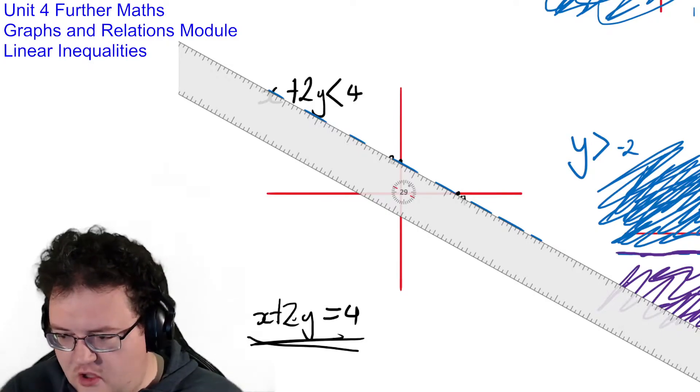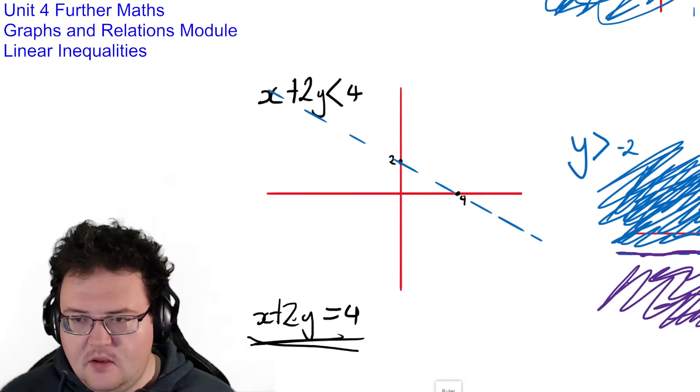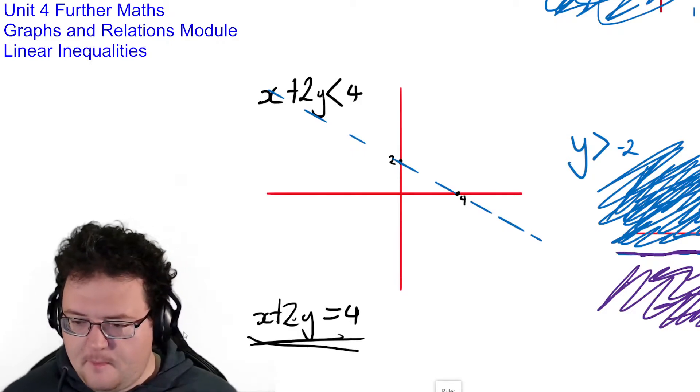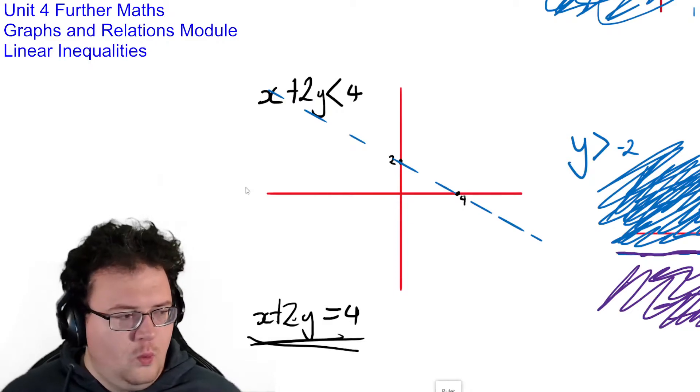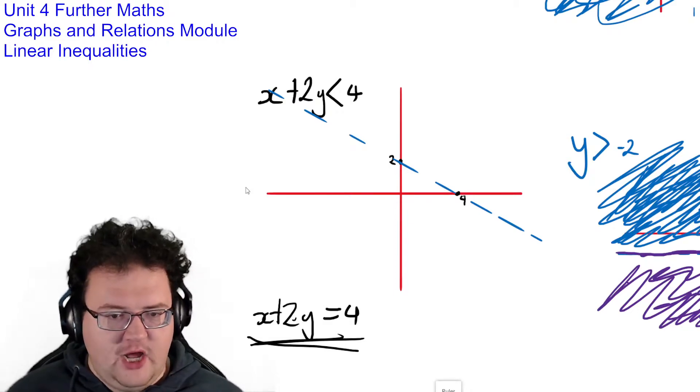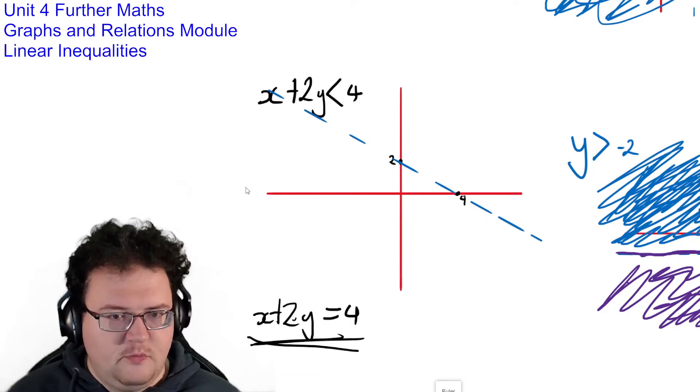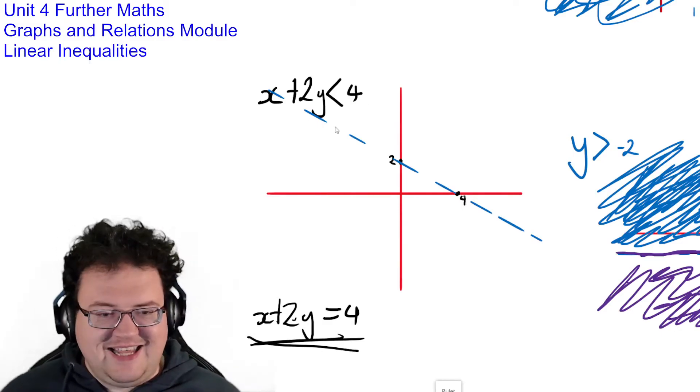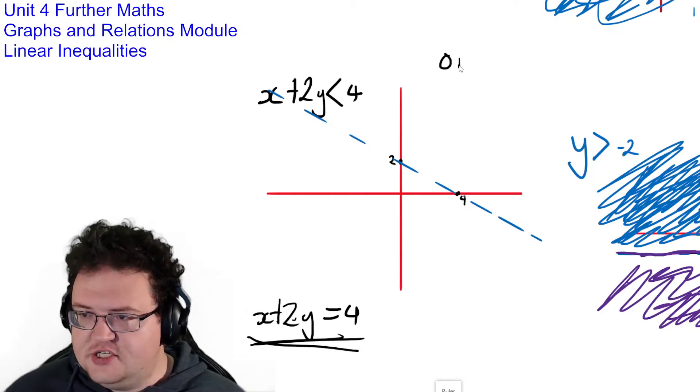And because it is an inequality, I need to shade everything. So how do I know what side of my line to shade? Left side or right side? Or top or bottom? Whichever way is easier for you to think about it. And it turns out the easiest way to do it is with what is called an origin test.